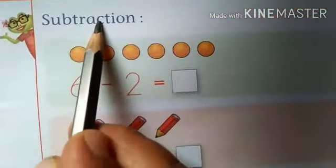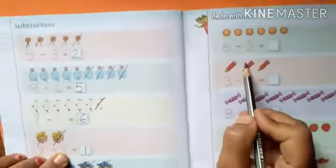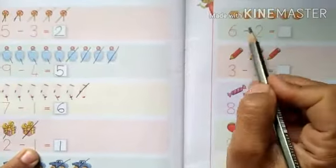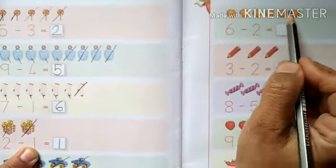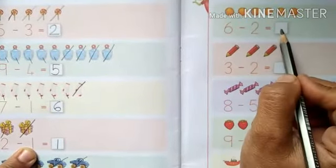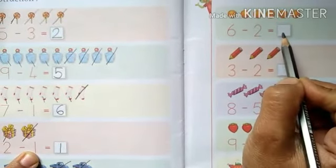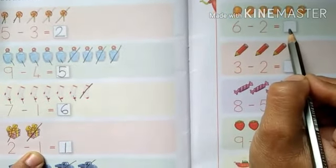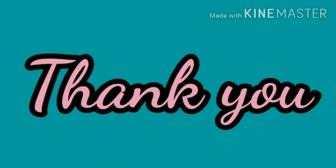Now next page, page number 67 — Subtraction. Yeh page ke jaise hi aapko isme bhi kya karna hai? Cut karna hai. 6 minus 2 — to 2 objects kaatne hain, aur jitne bach bachte hain woh yahan number likhna hai. Okay students? Yeh bhi aapka ghar se homework karenge. Okay, thank you.